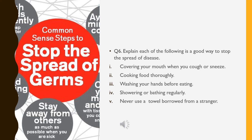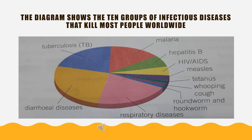The next question is: Cooking food thoroughly. We know that microorganisms are killed at high temperatures, so cooking food thoroughly will remove microbes from food. The next questions – Washing your hands before eating, Showering or bathing regularly, and Never using a towel borrowed from a stranger – you can write those answers by yourself, as we have discussed each topic in previous lessons.